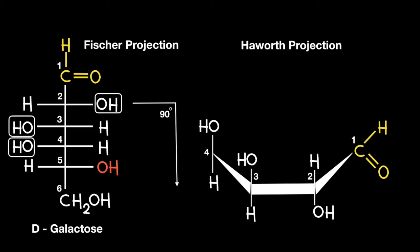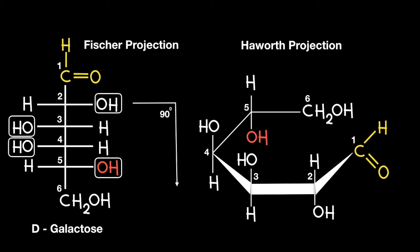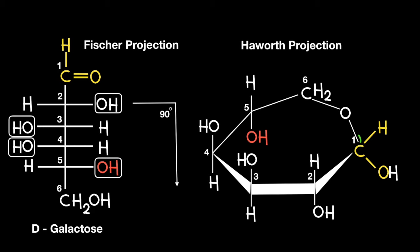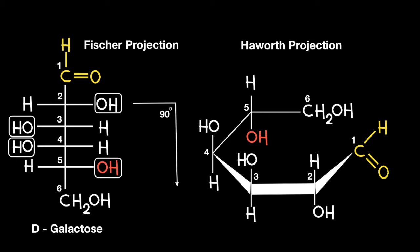Now moving on to carbon number 5, things start to get interesting. Based on how I have approached this so far, you would expect the OH coloured in red to be pointing down on the Haworth structure, with its corresponding hydrogen on the opposite side, leaving the CH2OH hanging to the right of carbon number 5. If left unaltered, this would lead to the formation of an intramolecular bond between the OH from carbon number 6 and the aldehyde functional group located on carbon number 1, resulting in a 7-membered ring as opposed to a 6-membered ring. Note how the oxygen from the CH2OH would make up the 7th member of the ring if this was allowed to occur.